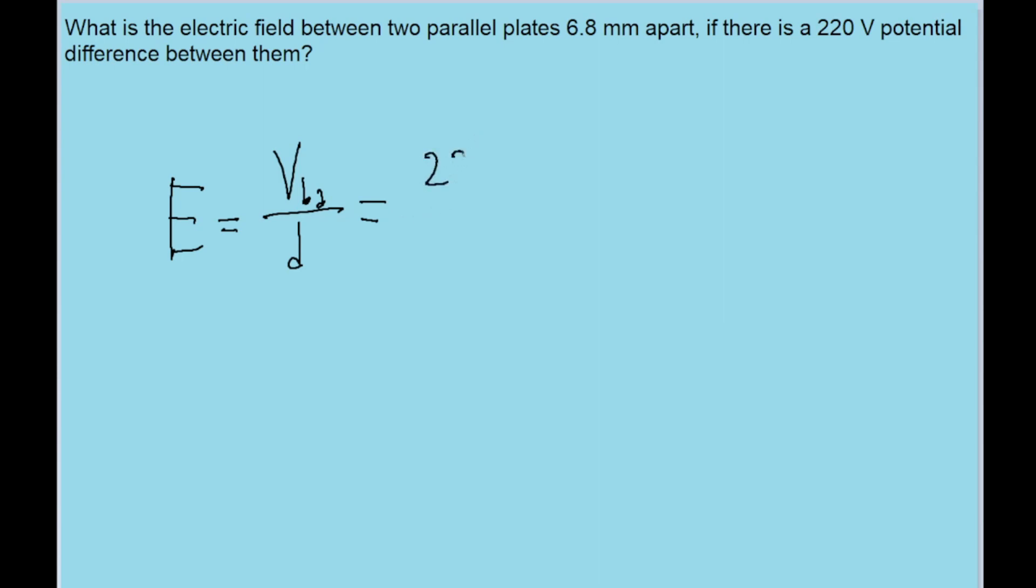The potential difference is 220 volts, and the distance between them is 6.8 millimeters. So I'm going to convert that into meters by just multiplying it by 10 to the power of negative 3.